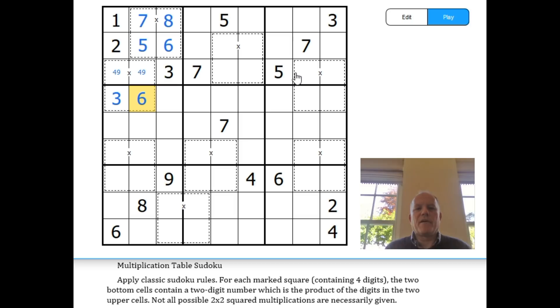Now in this row here, four, nine, three, seven, five. The one cannot be in these two cells. The reason is that one multiplied by any other single digit must give a single-digit answer, so it wouldn't fit in this double-digit space. So the one must be either here or here.